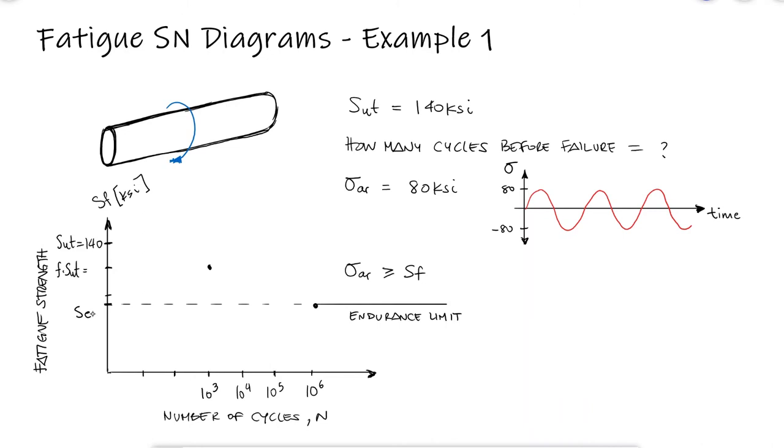In the main video, we learned that a very rough estimate for the endurance limit for steels is equal to half the ultimate strength as long as the ultimate strength is 200 KSI or lower. We call this rough estimate S-E prime, and we'll learn more about the correction factors in the main next video, link below.